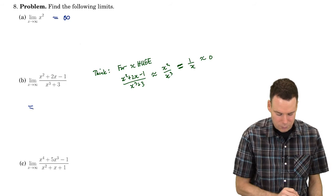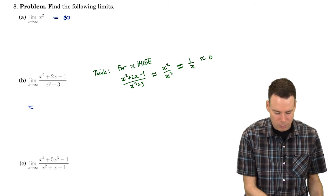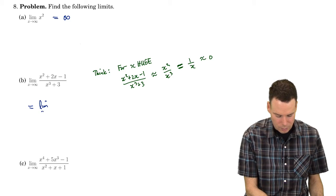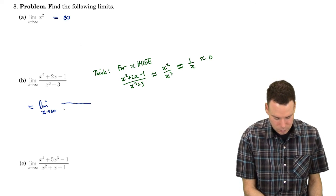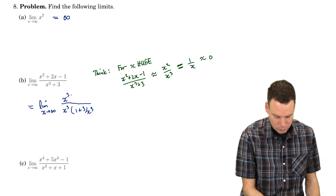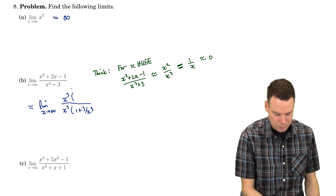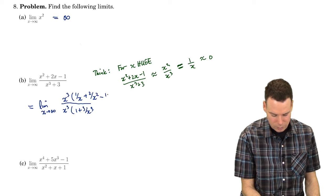Now let's do the calculation that verifies this. I'm going to use the fact that there's a cube on the bottom and not on the top. I'll factor out x cubed on the bottom, giving 1 plus 3 over x cubed, and factor x cubed out of everything on the top as well. When I factor it out of the first term I get 1 over x, out of the second term 2 over x squared, and out of the third term negative 1 over x cubed.